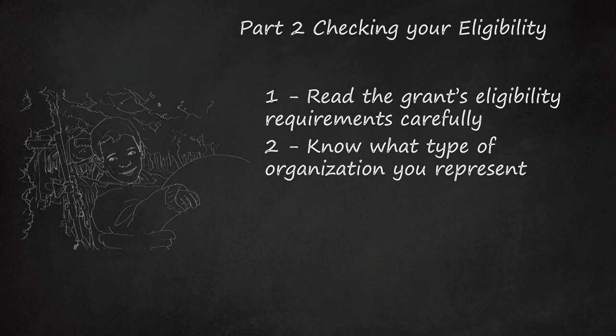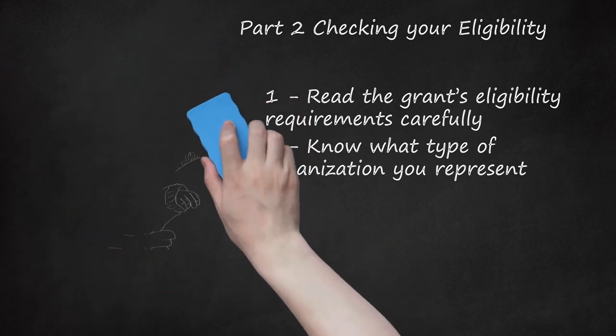Other eligible organization types include public housing agencies and non-profit organizations, which may include groups that either do or do not qualify for 501(c)(3) tax benefits. Small businesses must fit the definition and size classifications established by the Federal Small Business Administration; more information can be found at sba.gov. Most government grants, particularly ones offered through grants.gov, are designed for groups or organizations; however, some grants are available for individuals.